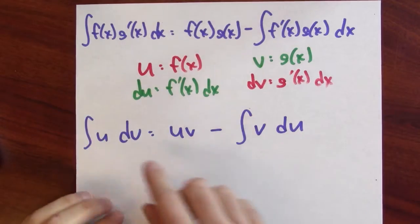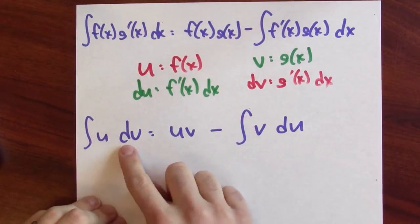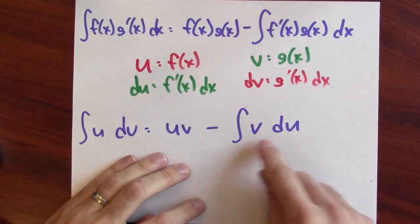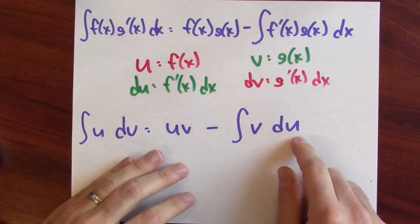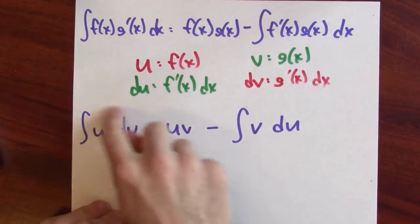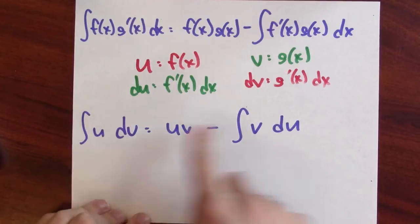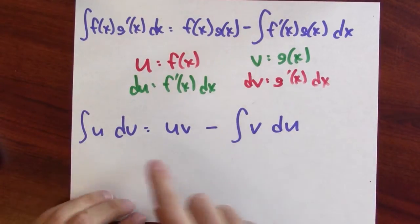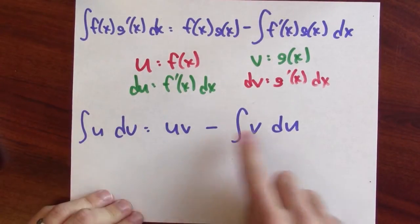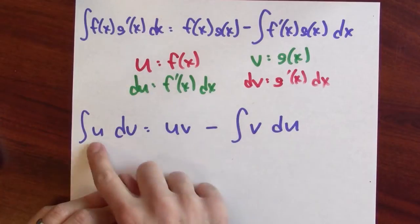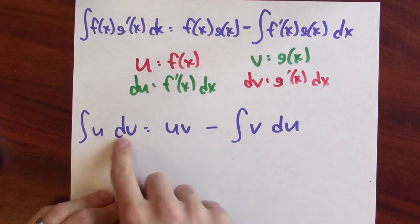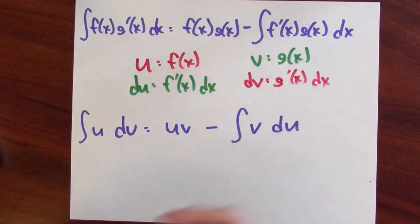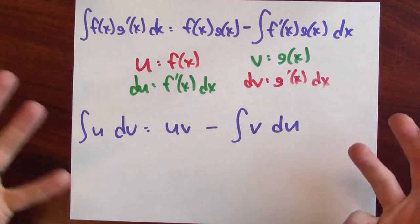This is maybe why it makes sense to call this integration by parts. I can integrate u dv provided I can integrate v du. It's a trading game — I'm trading this integration problem for another one, where one part is differentiated and another part of the integrand is anti-differentiated. Maybe that'll make things better.